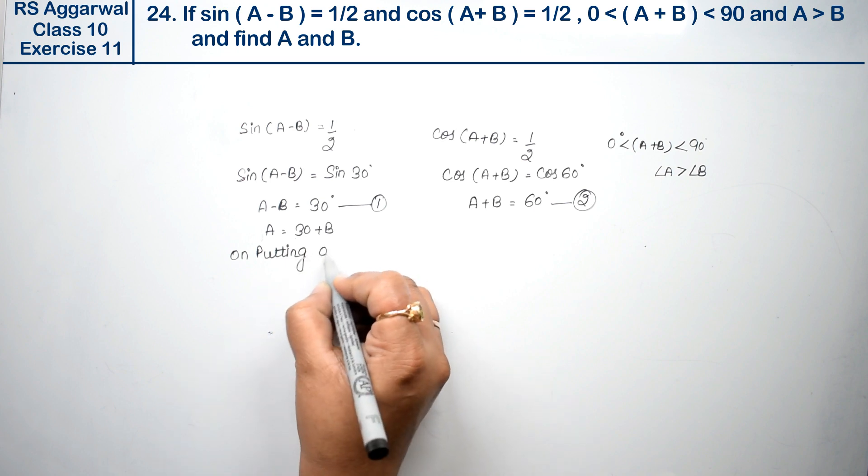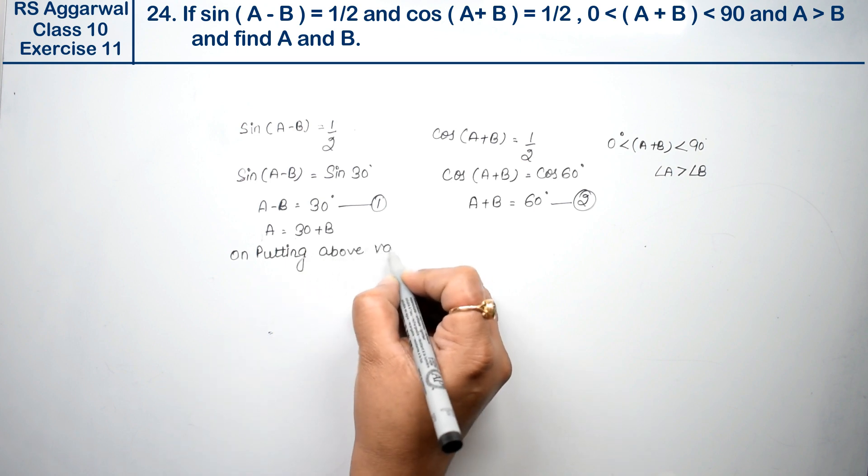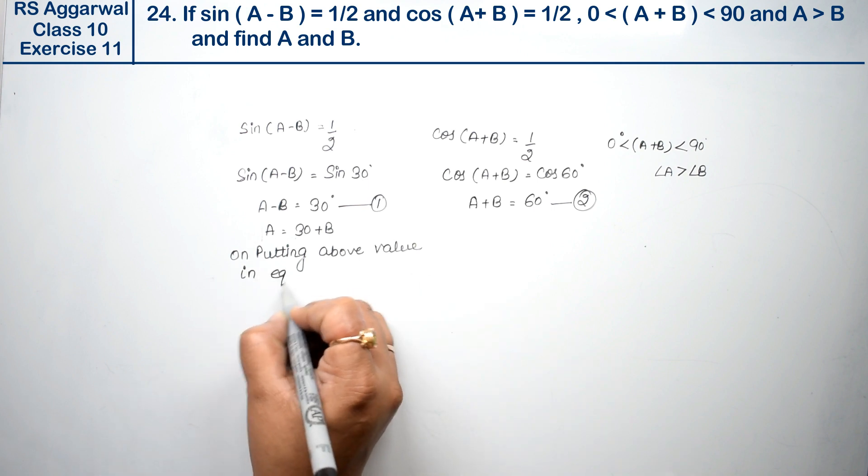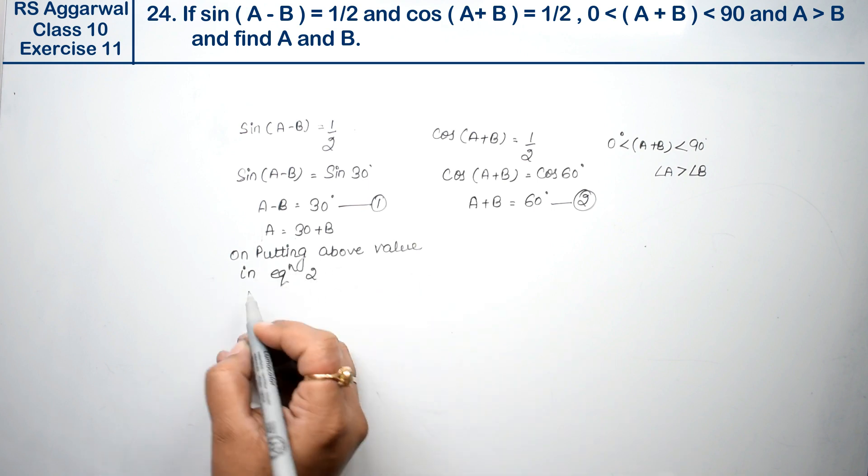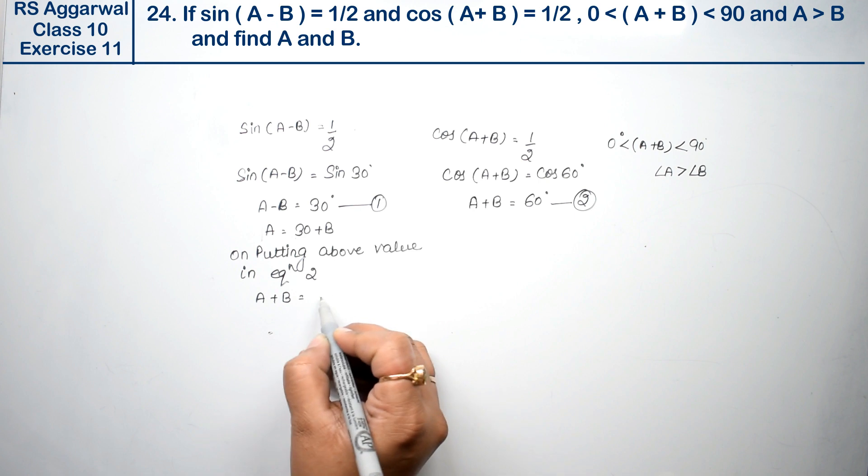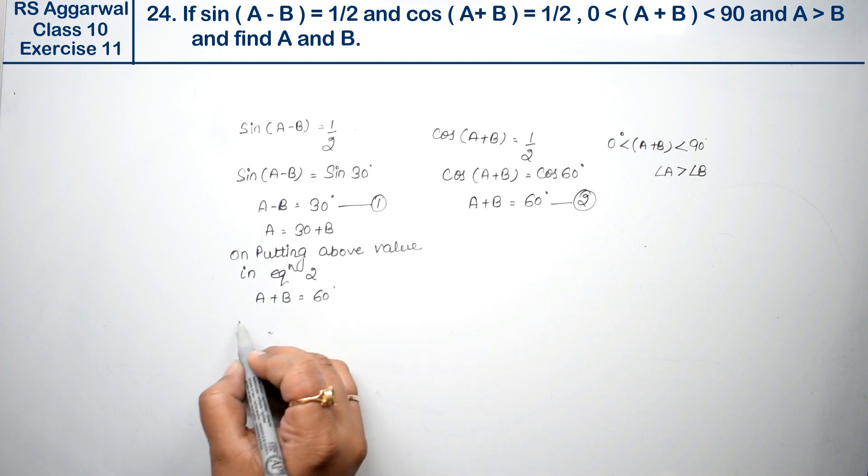Now we write: on putting above value in equation 2. A ki jagah 30 plus B likh di, A + B was 60 degree, so A ki jagah we put 30 plus B.